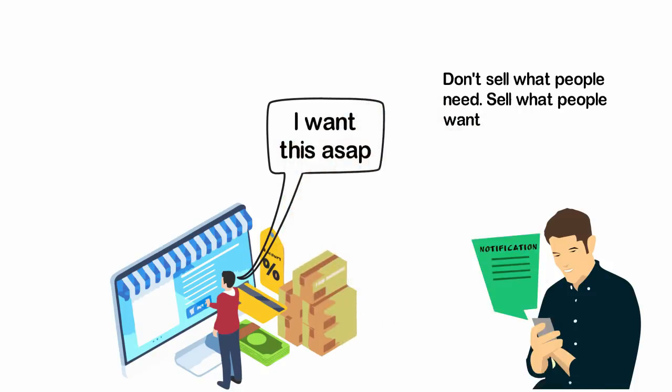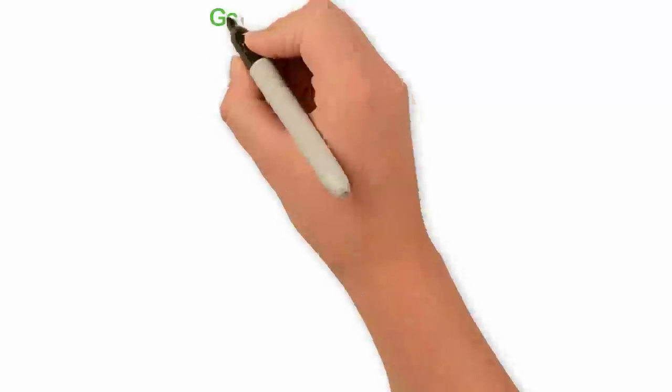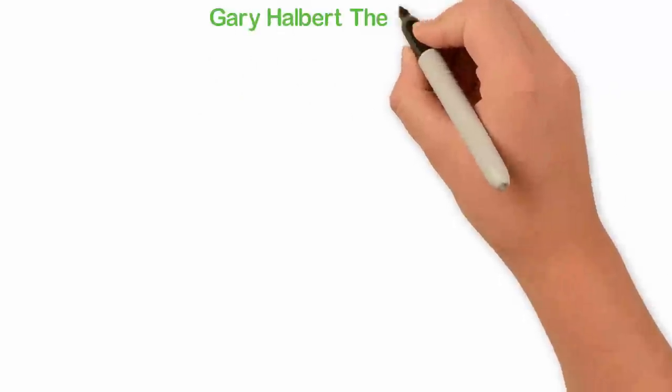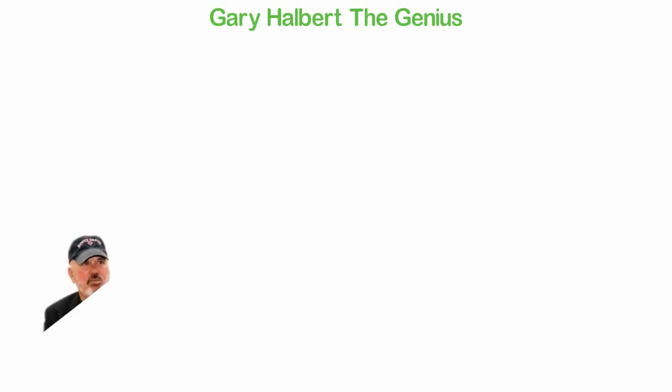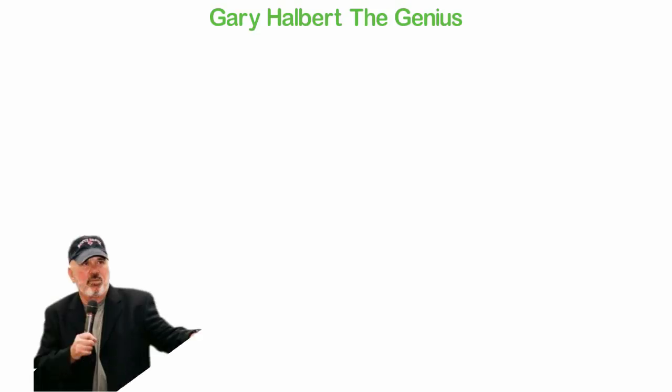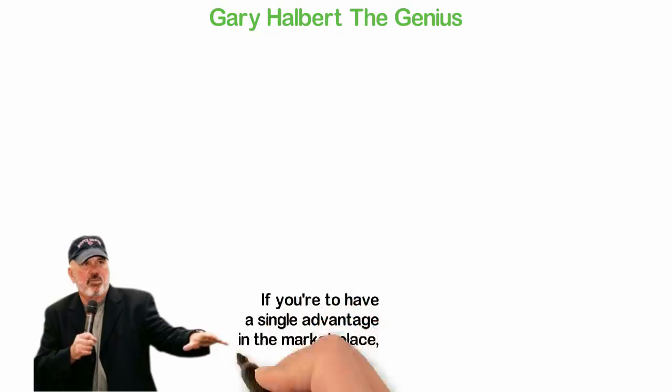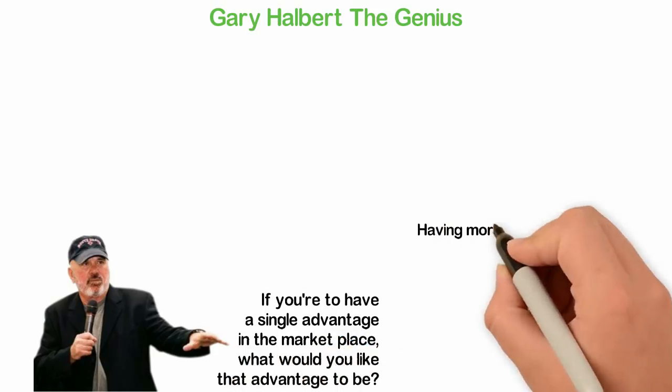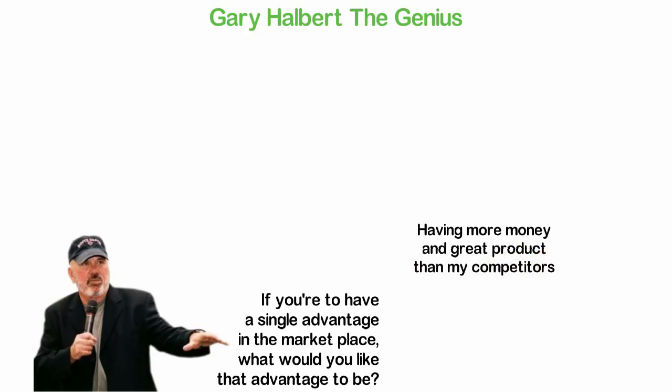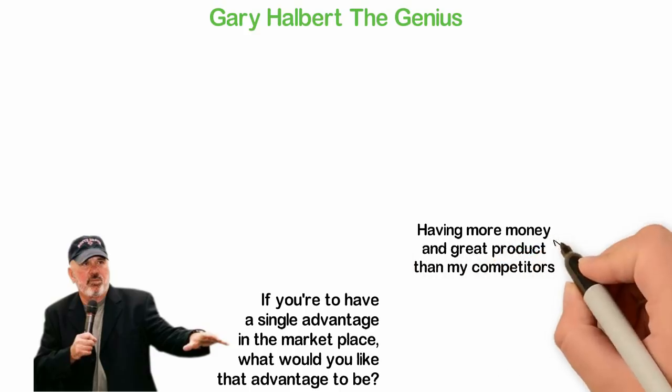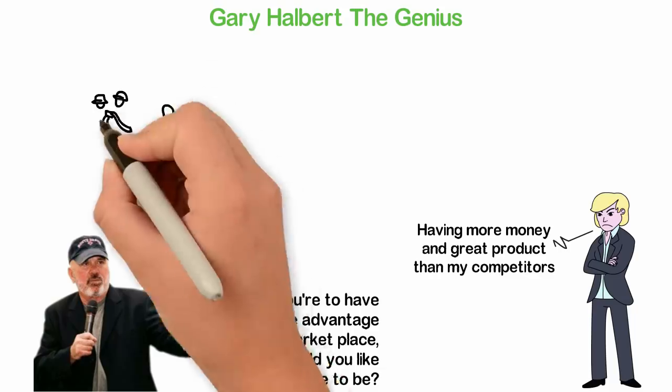Gary Halbert was a marketing genius who was famous for knowing how to sell anything to anybody. In one of his speeches, Gary asked his audience, if you are to have a single advantage in the marketplace, what would you like that advantage to be? Someone said that they would like to have more money than their competitors, while some think having a great product should be great. Gary had a better idea and that is, the single most important advantage you can ever have in the market is a hungry crowd.